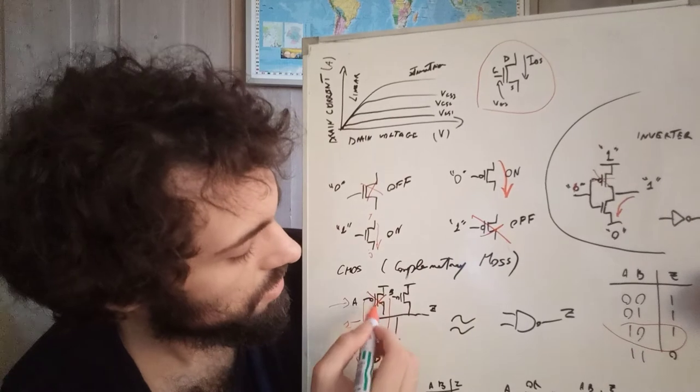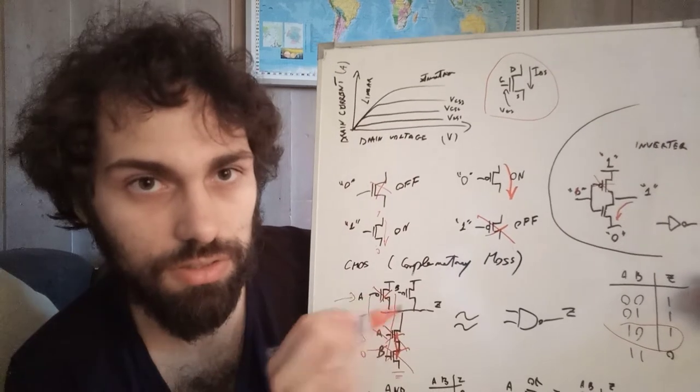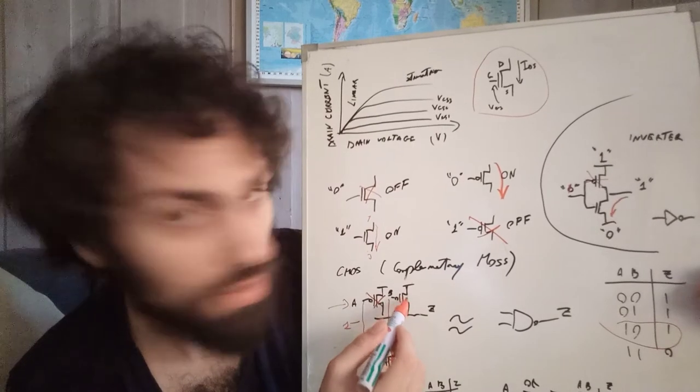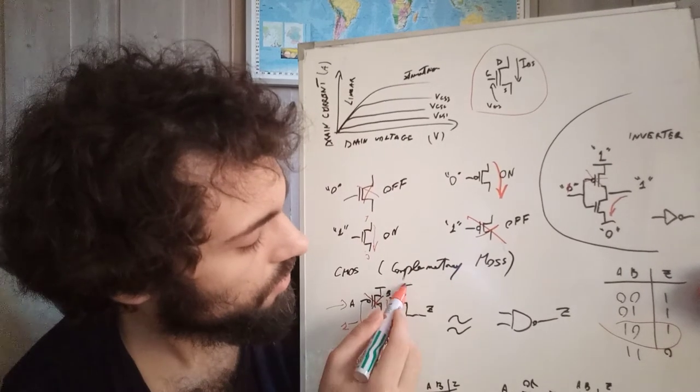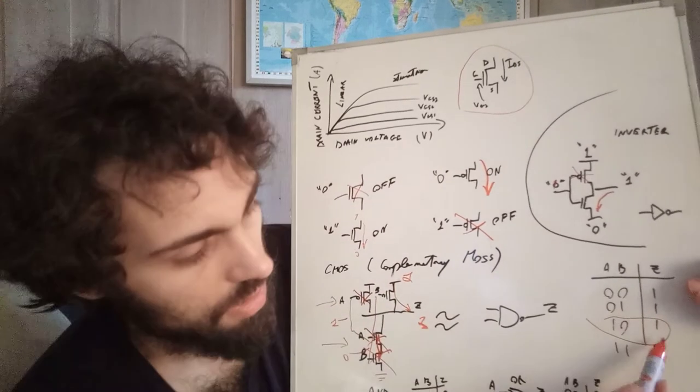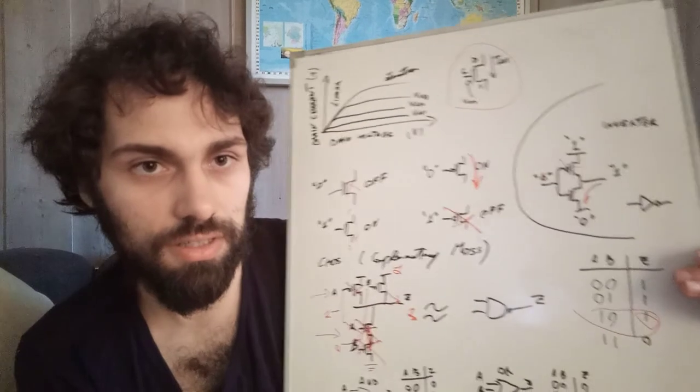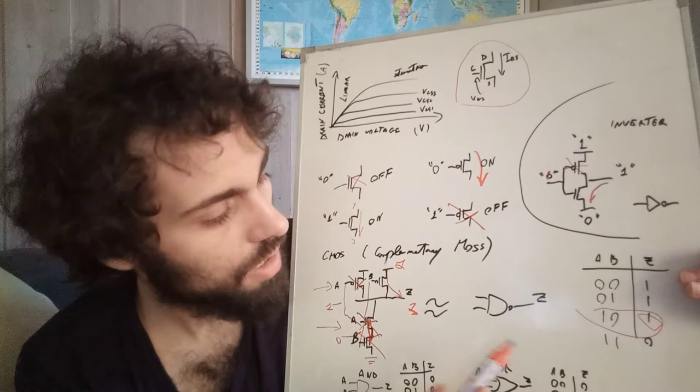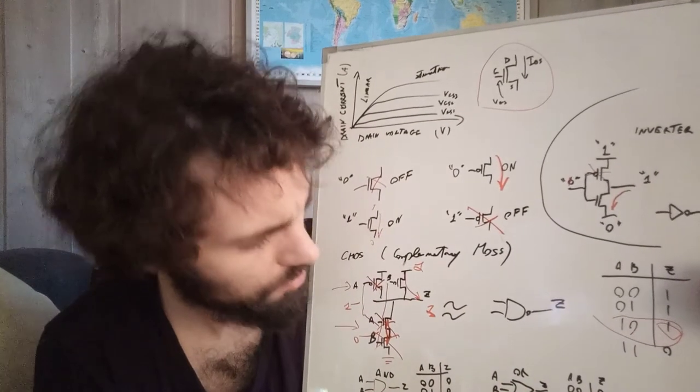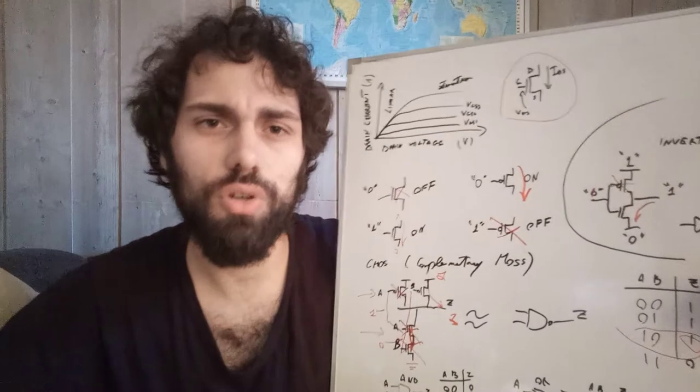So the pull-down network disconnects from the ground. What about the pull-up? A was equal to one, so this PMOS is disconnected, it's like it does not exist here, but this one connects. So we have a one that propagates at the output, and as you can see the result here is also one, so this is correct. You can try all the other examples on your own and this is just an example of a logic gate.